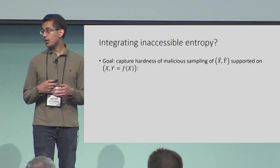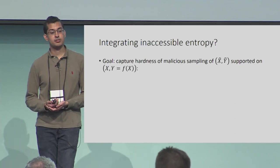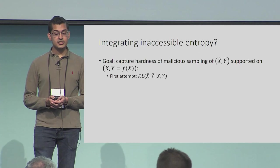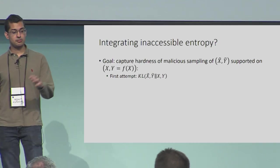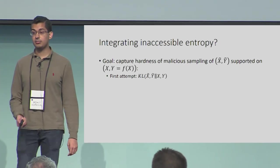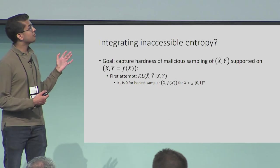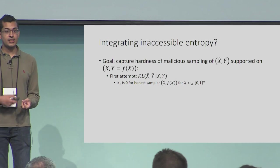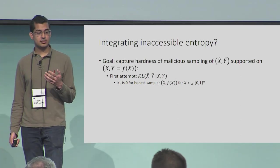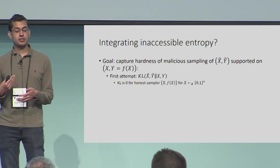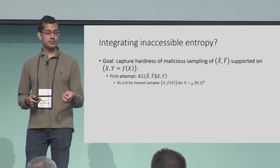Our goal is to capture the hardness of maliciously sampling a pair (X-tilde, Y-tilde) consistent with the one-way function. The first and most natural attempt is to look at the relative entropy of the output distribution of the maliciously sampled (X-tilde, Y-tilde) with respect to the true (X, Y), and say this is large for any polynomial time sampler. Unfortunately, this is not true — the divergence is zero for the simplest honest case, where you just pick a uniformly random X and compute f(X). This relative entropy isn't capturing the usefulness of the generator or the maliciousness of the sampling process.